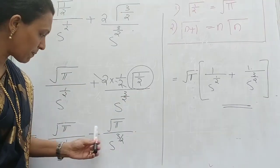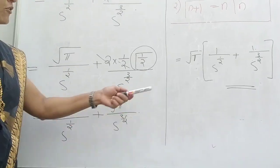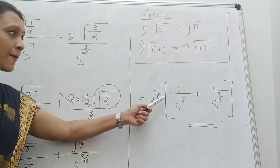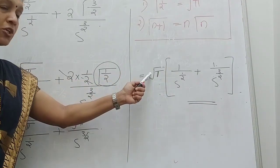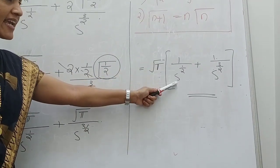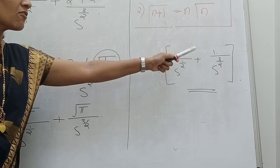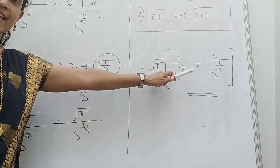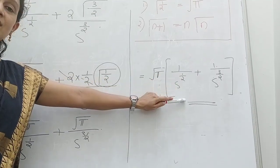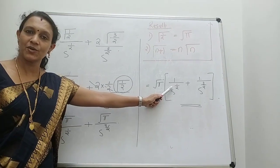Since root pi is a common factor, take it outside: the final answer is root pi into 1 by S raised to half plus 1 by S raised to 3 by 2. I hope you all understood the Laplace transformation. We discussed the definition and the seven standard results, and did a few questions. Thank you.